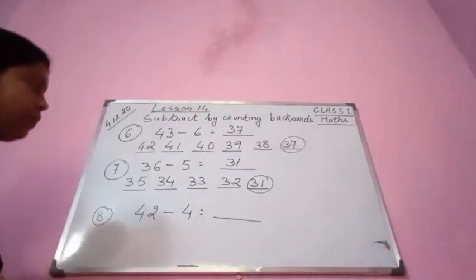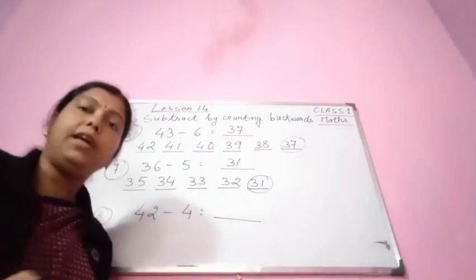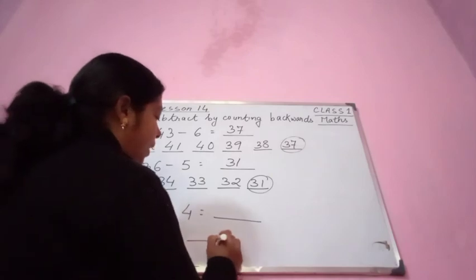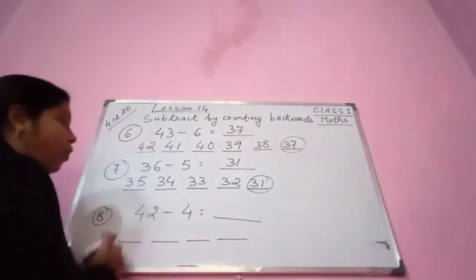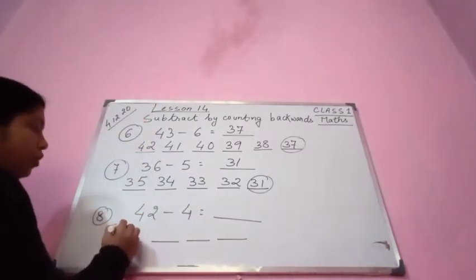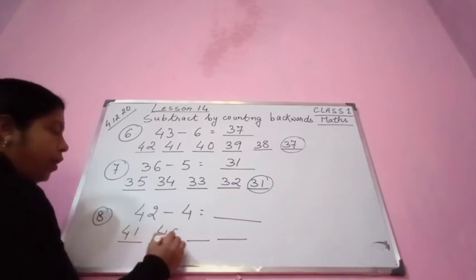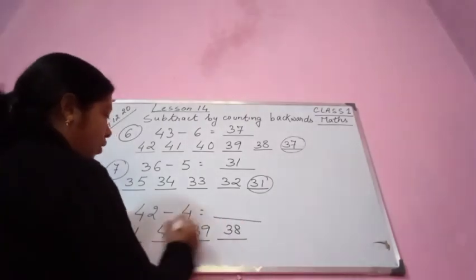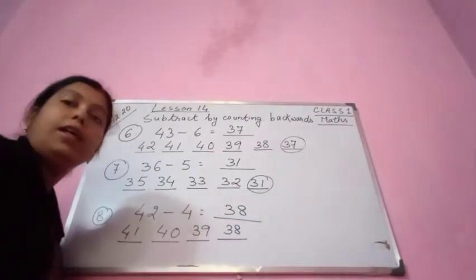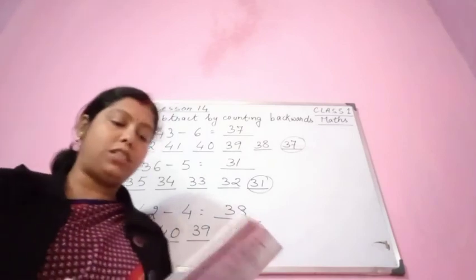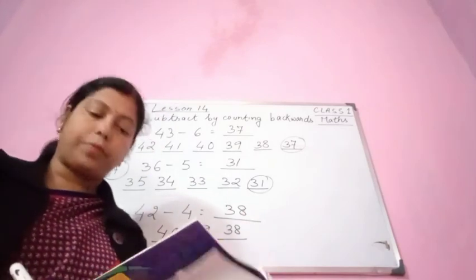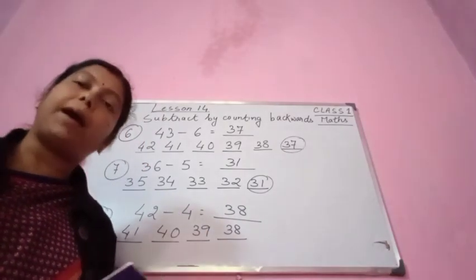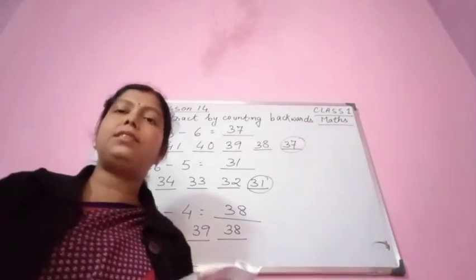Next, number 8 is 42 minus 4. Before 42, we are going to count 4 places, because it is 42 minus 4 — we are subtracting 4 from 42. Before 42: 41, 40, 39, 38. The answer is 38. 42 minus 4 is 38. Please do this in your maths copies — this is page 93, subtract by counting backwards. Please practice. Thank you.